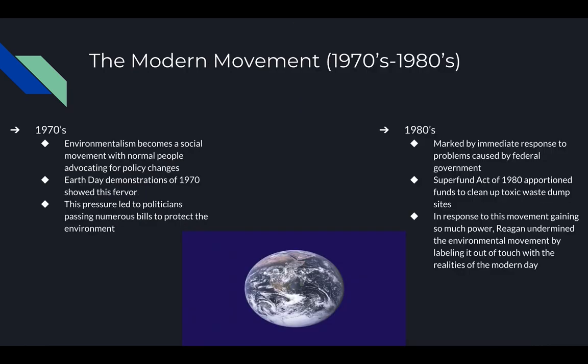The modern movement continued through the 70s and 80s. In the 70s, everyday Americans became involved in environmental politics in response to what was learned in the 50s and 60s. The Earth Day demonstration of 1970 showed it had become a real social movement. This put pressure on politicians to make legislative changes such as the Clean Air Act of 1970, the Water Pollution Control Act of 1972, the National Environmental Policy Act of 1970, the Endangered Species Act of 1973, and the Clean Water Act of 1977.